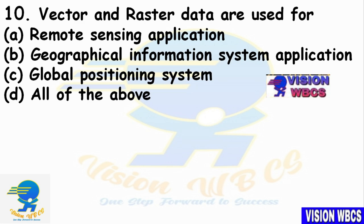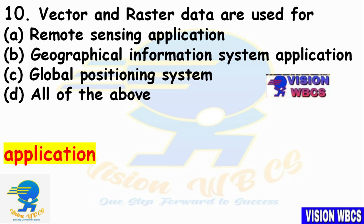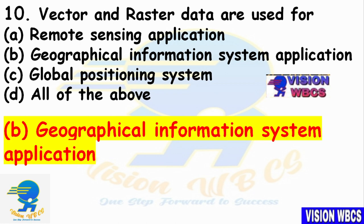Tenth question: Vector and Raster data are used for? Option A — Remote Sensing applications. Option B — Geographical Information System applications. Option C — Global Positioning System. Option D — All of the above. The right answer is Option B: Vector and Raster data are used for Geographical Information System (GIS) applications.